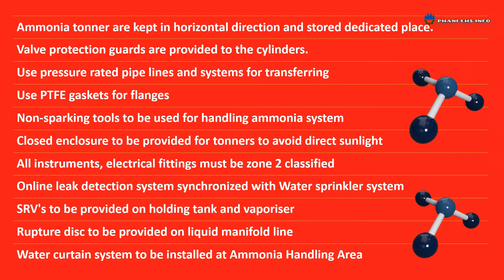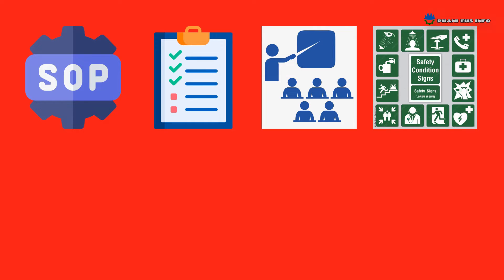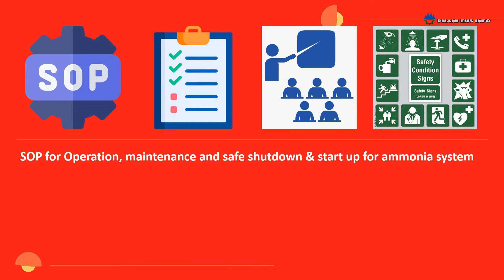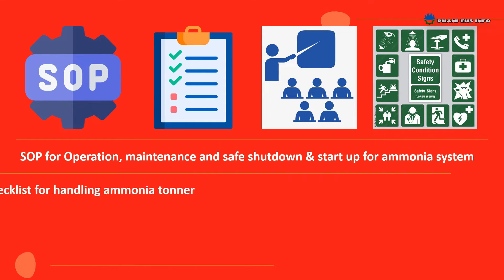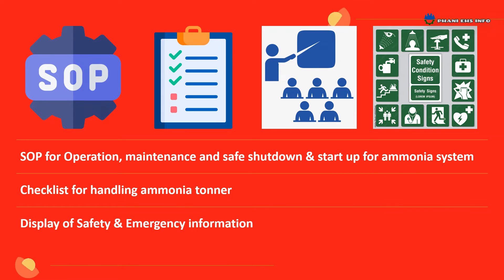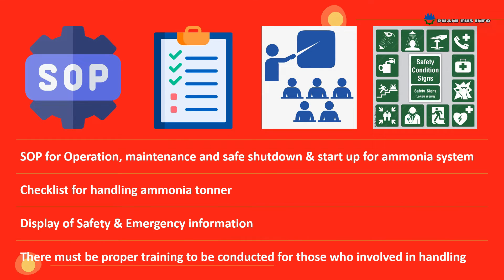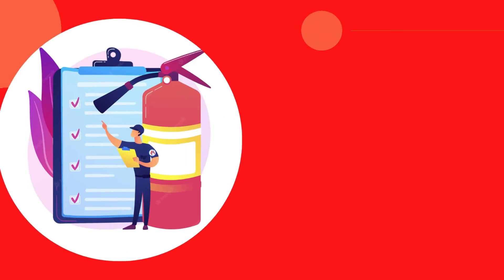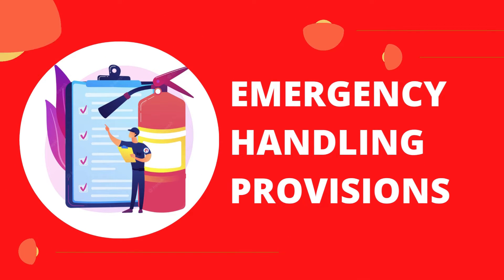Administrative Controls: SOP for operation, maintenance, safe shutdown, and startup procedure for ammonia system. Checklist for handling ammonia tonner. Display of safety and emergency information. There must be proper training conducted for those involved in handling of ammonia. Emergency handling systems required at ammonia handling area.